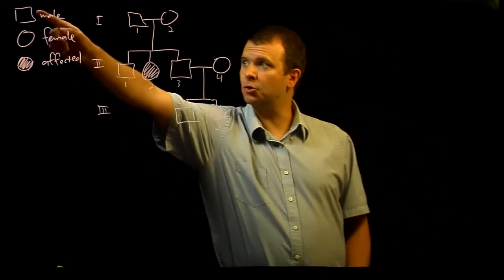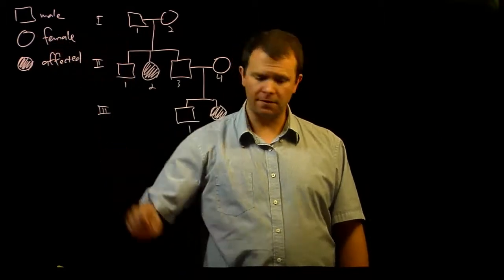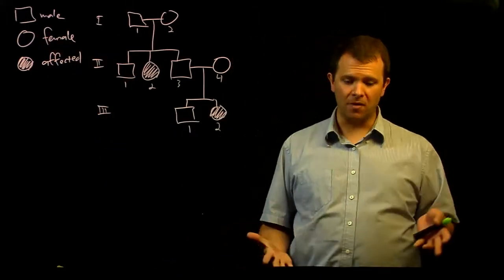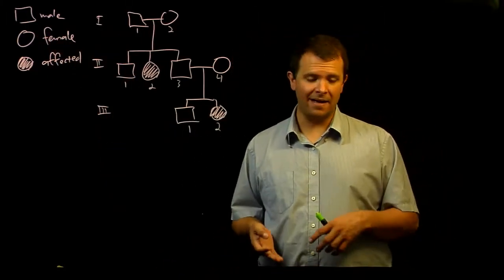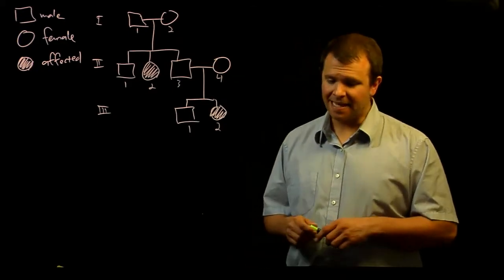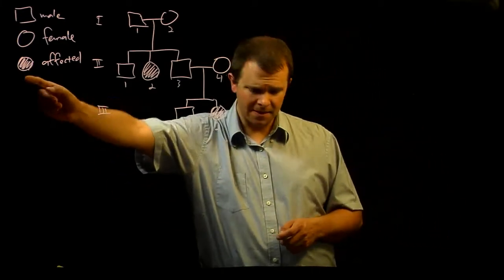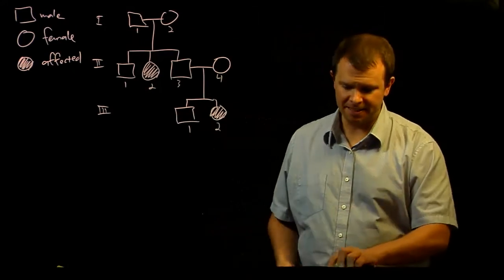The basic symbols are a square for a male, a circle for a female, and if we're studying a trait or more commonly a heritable disease, then an individual that is affected will have a filled-in symbol.